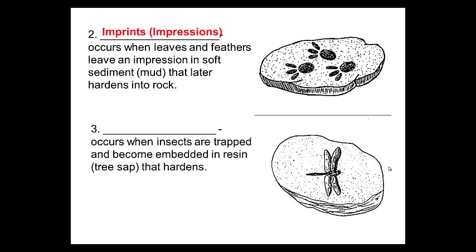Number two: imprints or impressions. This occurs when leaves and feathers leave an impression in soft sediment like mud that later hardens into rock. So if you look at some rocks and see fossils of leaves on them, you're actually looking at an imprint or impression.